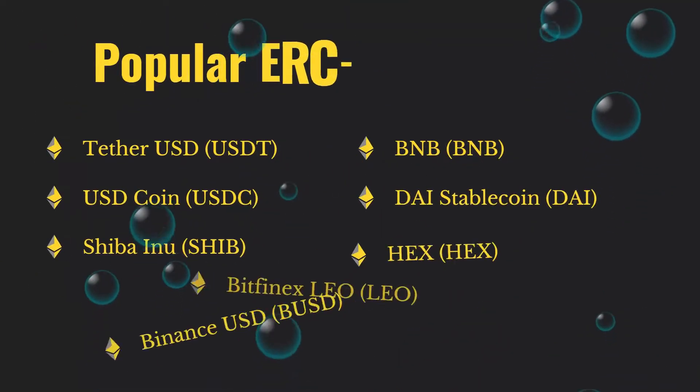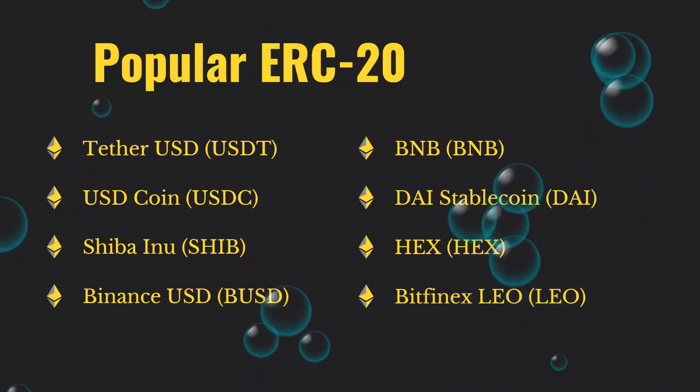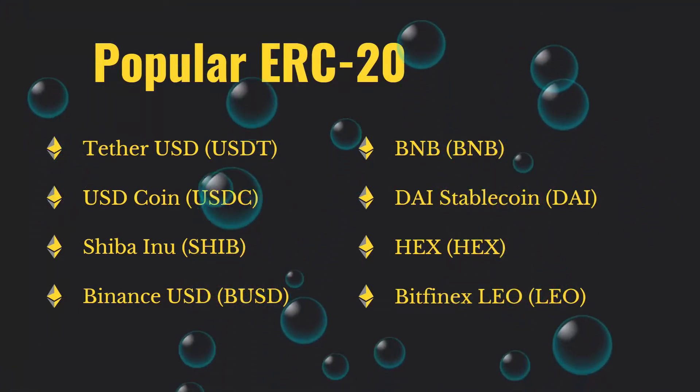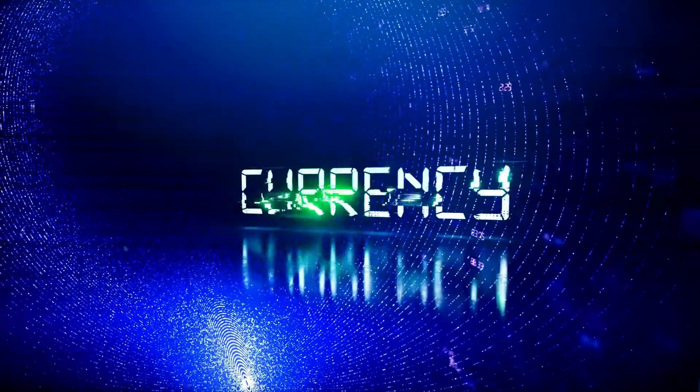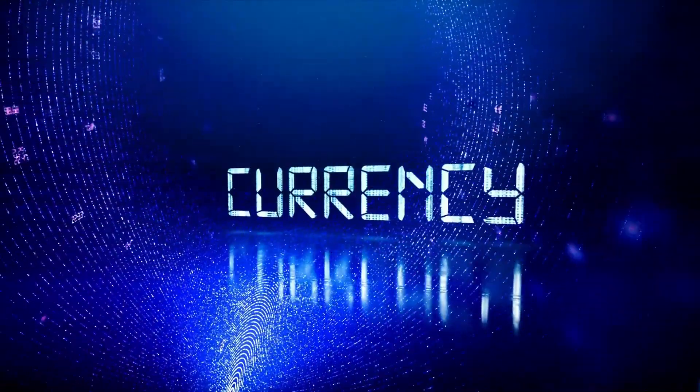Right now we have popular tokens which follow ERC-20 standards like Shiba, Yearn, Binance, DAI, USDT, and USDC. These are a couple of popular tokens we have currently in circulation that users are buying and selling.